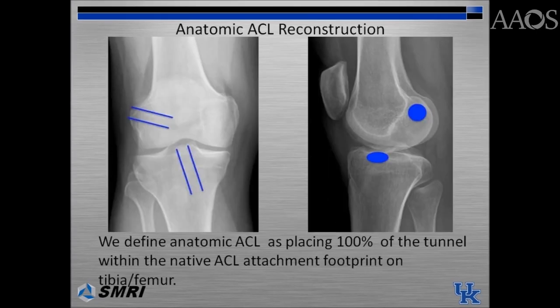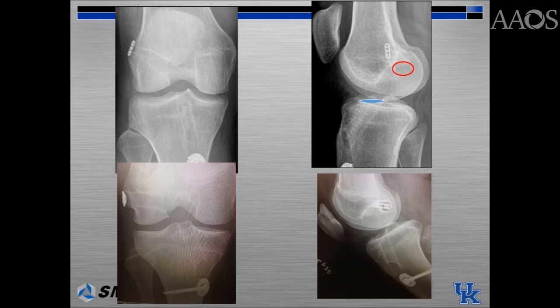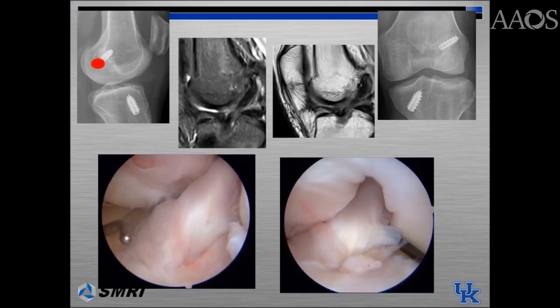The authors define anatomic anterior cruciate ligament reconstruction as placing 100% of the tunnels within the native ACL attachment footprints on the tibia and the femur. These images show the appropriate anatomic placement of the femoral and tibial tunnels using hamstring as well as patellar tendon grafts.